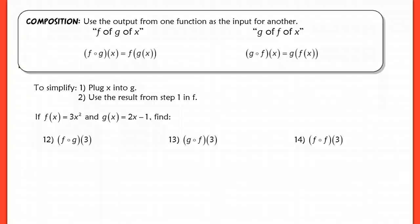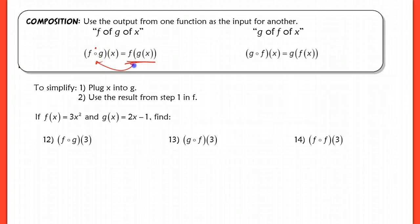The composition of a function is probably our most difficult part of this lesson. What you do is use the output from one function as the input for the other. Notice that this is not a multiplication sign — it's an open circle. That means f of g of x. You're most commonly going to see it written this way in all your worksheets, but both forms are equivalent to each other.